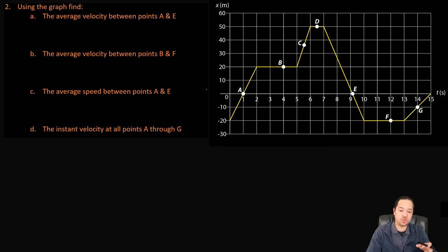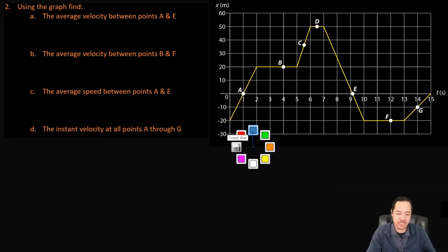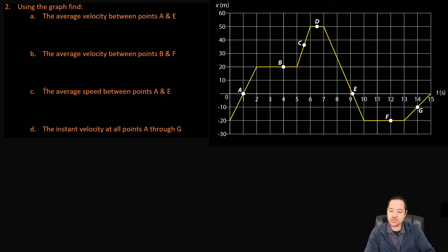Question two has a graph with points labeled A, B, C, D, E, F, G. We need to find the average velocity between points A and E. This is actually a trick question — the answer is zero meters per second.